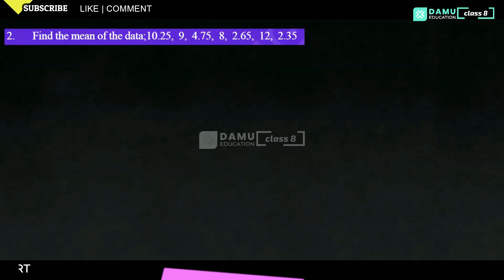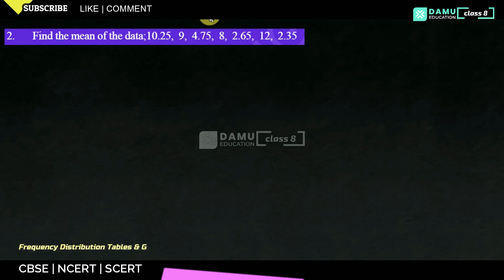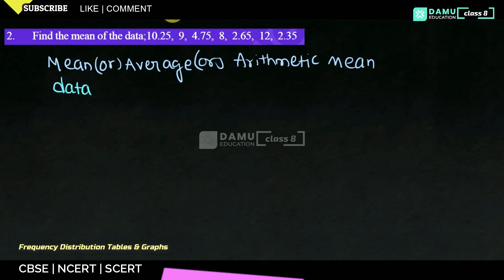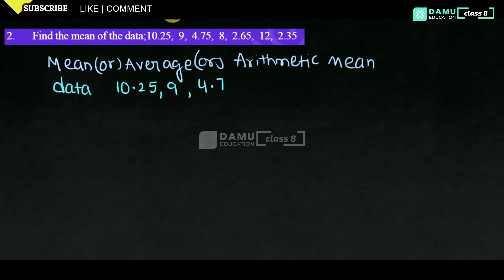Hello viewers, in this module we are going to discuss the second question: find the mean of the data. Mean, average, and arithmetic mean are all the same. The data values given are: 10.25, 9, 4.75, 8, 2.65, 12, and 2.35.